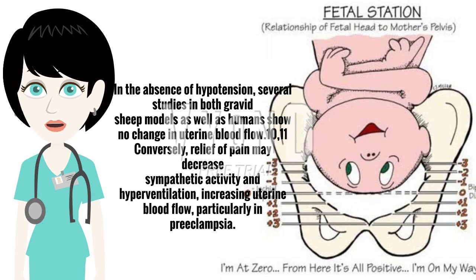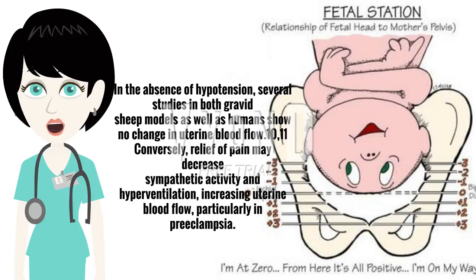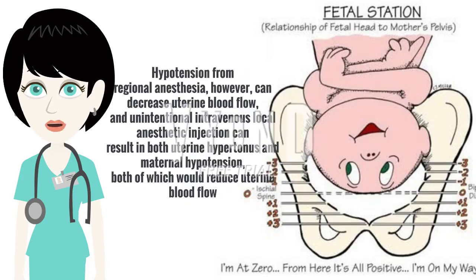several studies in both gravid sheep models as well as humans show no change in uterine blood flow. Conversely, relief of pain may decrease sympathetic activity and hyperventilation, increasing uterine blood flow. Hypotension from regional anesthesia,